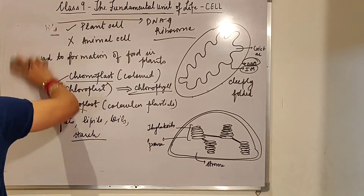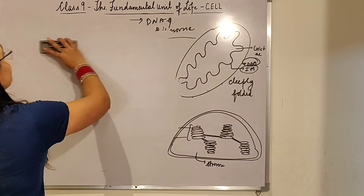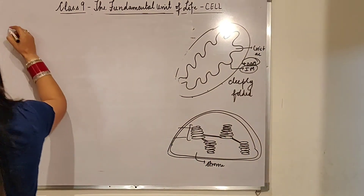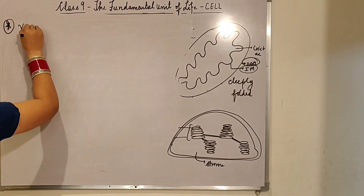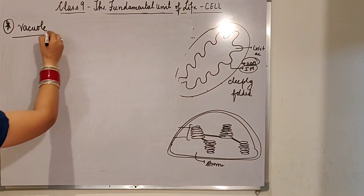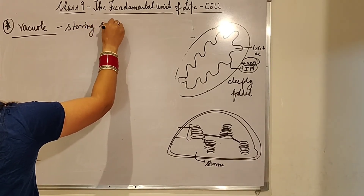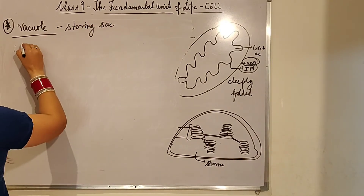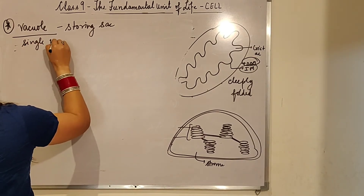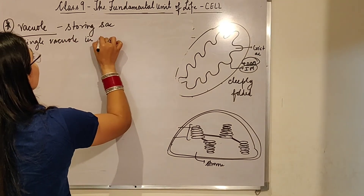Now let's move to the next organelle — the vacuole. Vacuoles are basically the storing sac; they are used for storage. In a plant cell, there is a single large central vacuole which occupies basically 50 to 70 percent of the cell's space.